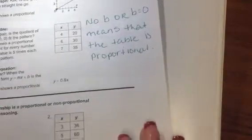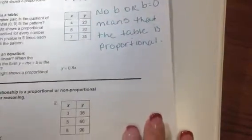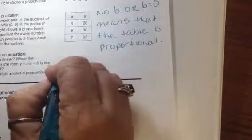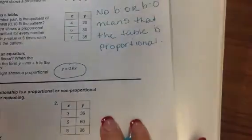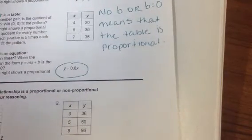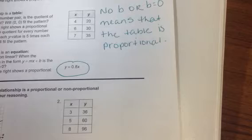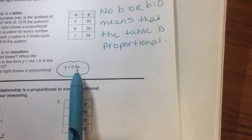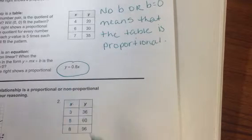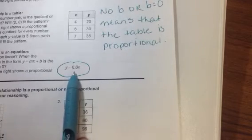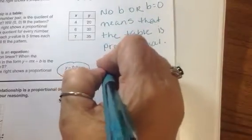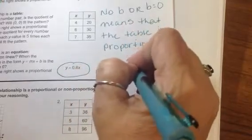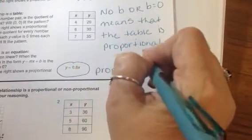That also works when I'm looking, let's look right here, at the equation. If you notice, I don't like that light doing that. I'm so sorry. But it's too dark if I don't have it on. If you notice, Y equals 0.8X, but there's not a B. There's not a plus anything. I just have my M, my slope. So again, if there's no B, that means that this equation is proportional. Okay?